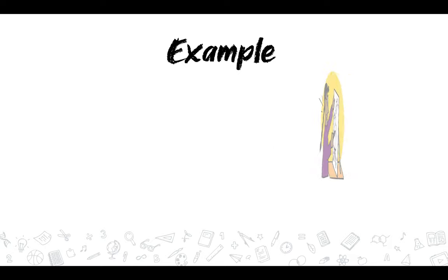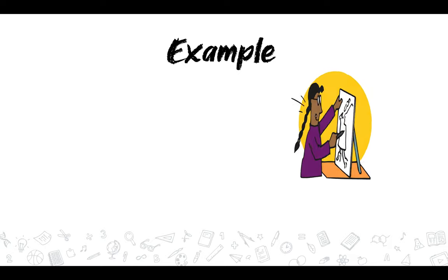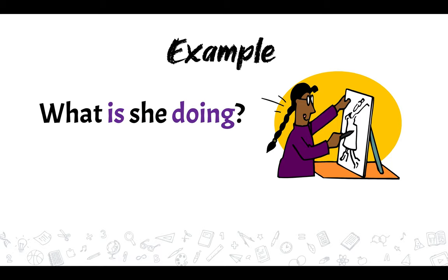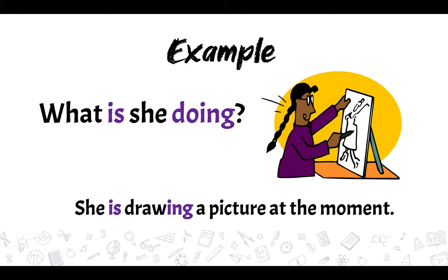Is it an action happening now or around the moment of speaking? It is used to describe pictures. It is also used to describe an action that may or will happen later on, like a future arrangement. For example, we have this girl — what is she doing? She is drawing a picture at the moment.